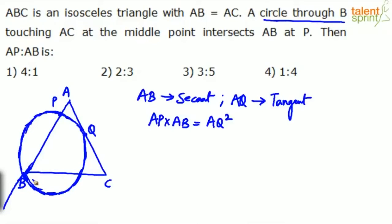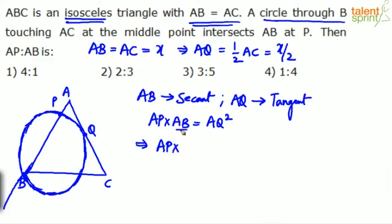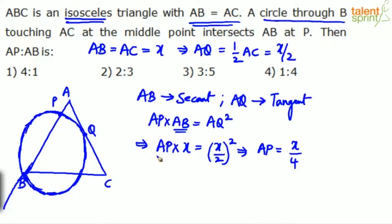Triangle ABC is isosceles with AB equals AC. Let AB equals AC equals x. Then AQ, since Q is the midpoint of AC, will be half of AC, which equals x by 2. Now substituting: AP into AB equals AQ squared, so AP into x equals (x/2) squared, giving AP equals x squared by 4 divided by x, which simplifies to x by 4.